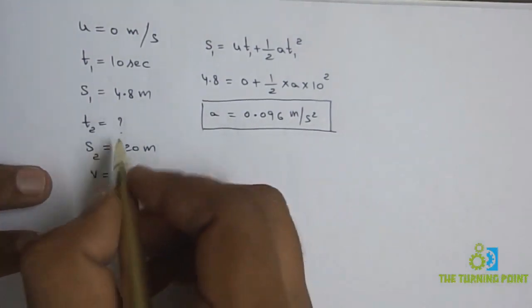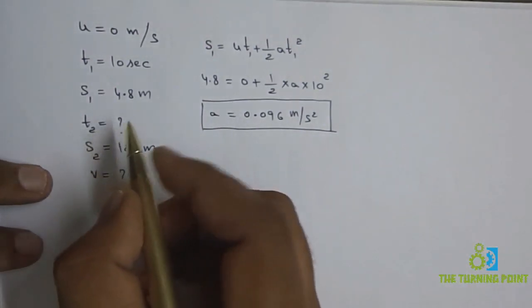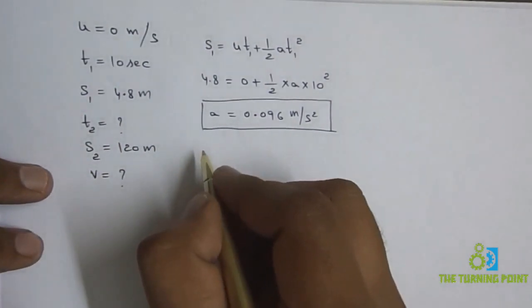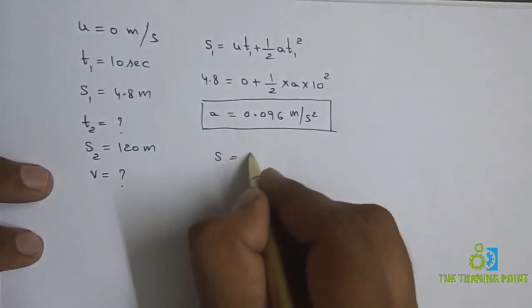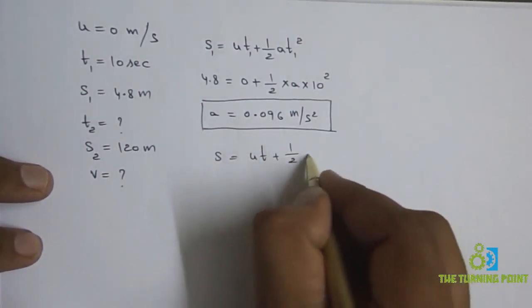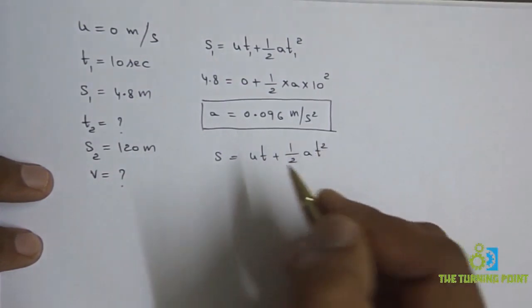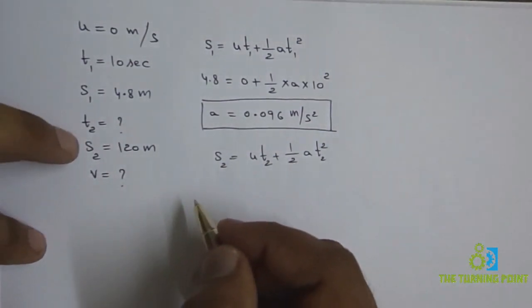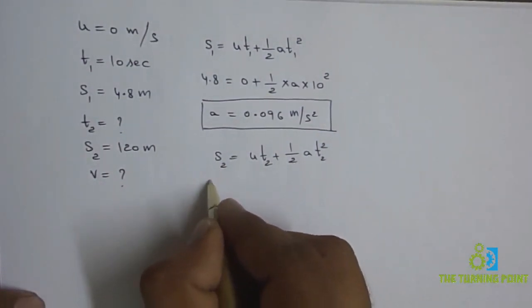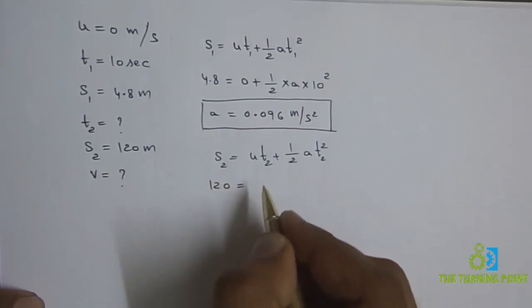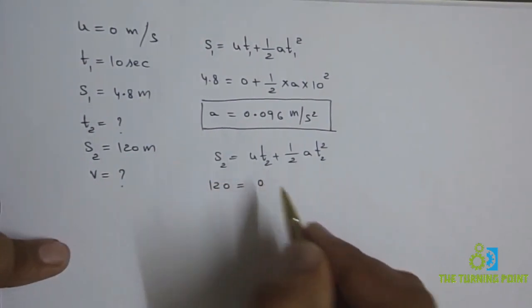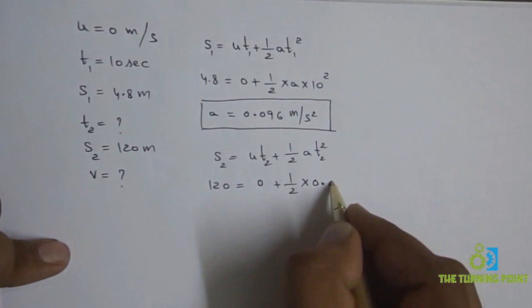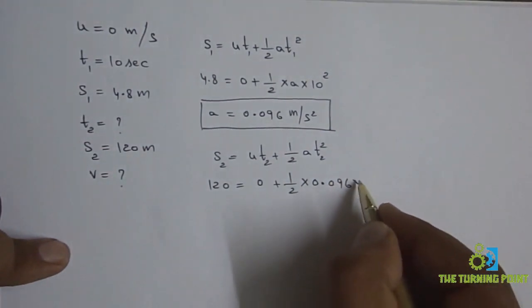Now consider the second case. We are asked to calculate the time required to travel a total distance of 120 meters. Using the same relation s = ut + ½at², for the second case with suffix 2, we need to find t2. Here s2 = 120m and initial velocity is 0, so: 120 = 0 + ½ × 0.096 × t2².